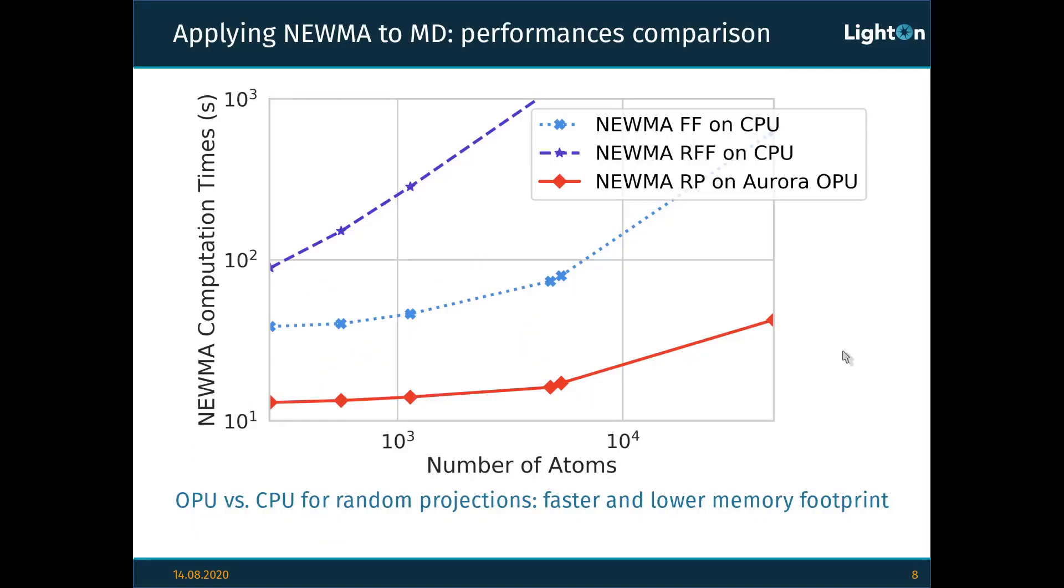But now let's talk a bit about performances. In this plot, we compare the performances of NEWMA using CPU-based algorithms to compute random projections versus using the LightOn Aurora OPU to compute random projections. And as you can see, even though for a small number of atoms the OPU is faster but not that much, as the number of atoms grows larger, the difference also grows larger.